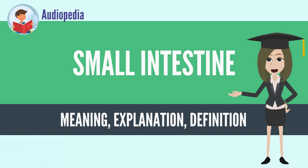The small intestine has three distinct regions: the duodenum, jejunum, and ileum. The duodenum is the shortest part of the small intestine and is where preparation for absorption begins.